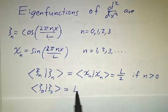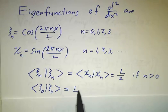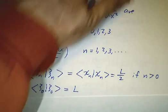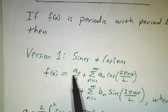The fact that it's L rather than L over 2 is why you get this particular a0 over 2 instead of a0.